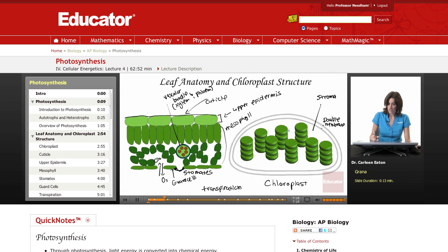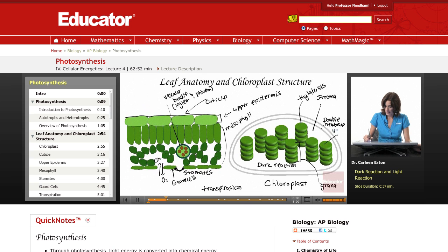So we have this double membrane, we have this fluid called stroma, and then we have these stacks of discs called grana. These discs, which are membranous, are called thylakoids, and we'll talk in more detail about what happens, where each process takes place. But one thing in general to remember is that the dark reactions take place in the stroma, or the light-independent reactions, whereas the light reactions take place in the grana.